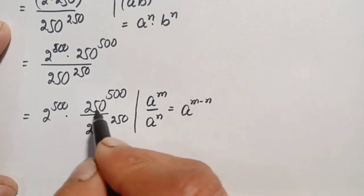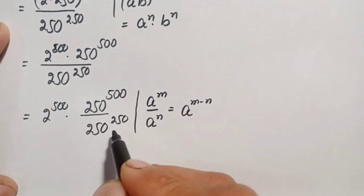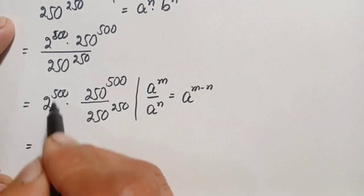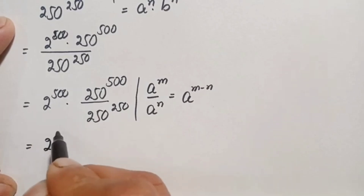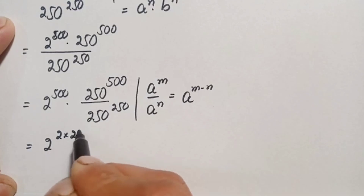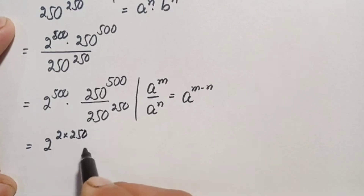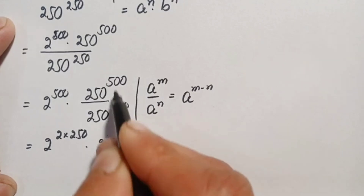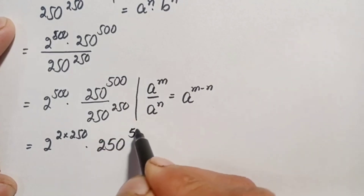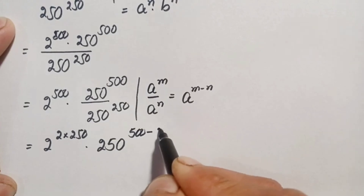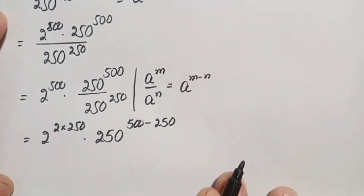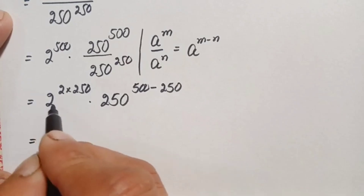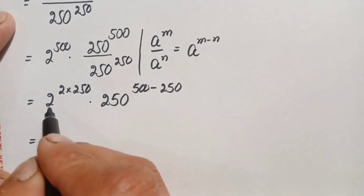Using this identity, we write 2 raised to power 500 — and we can write 500 as 2 times 250 — times 250 raised to the power of 500 minus 250, which simplifies the powers of 250.